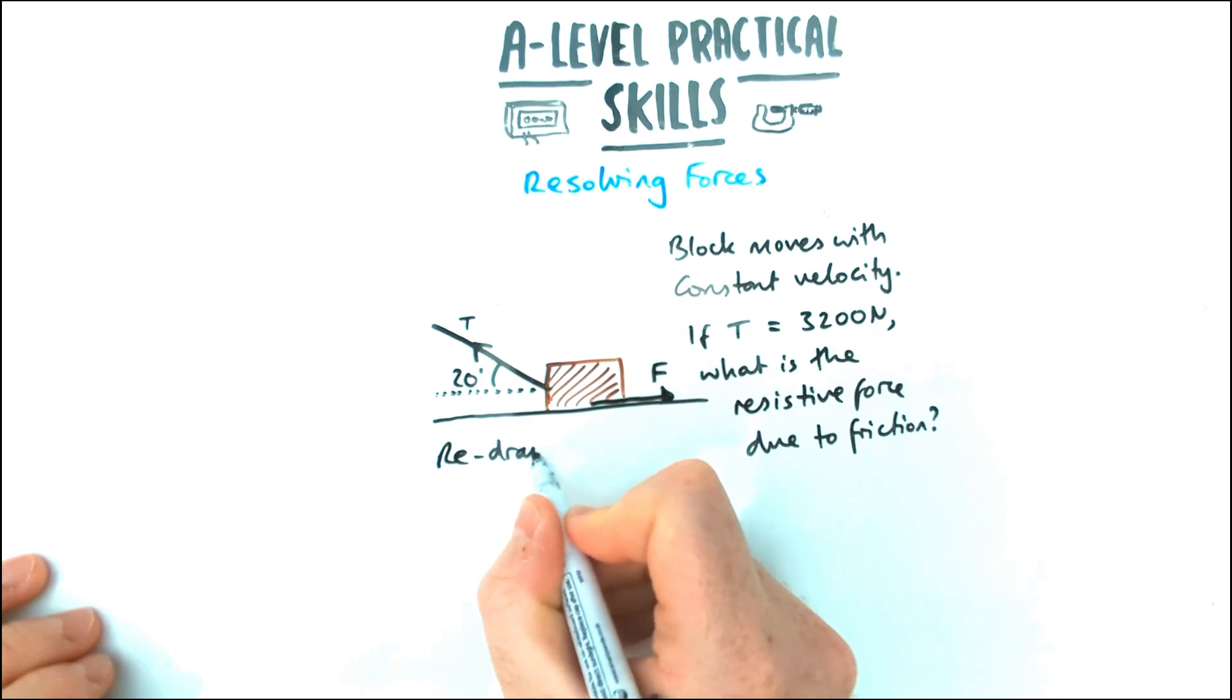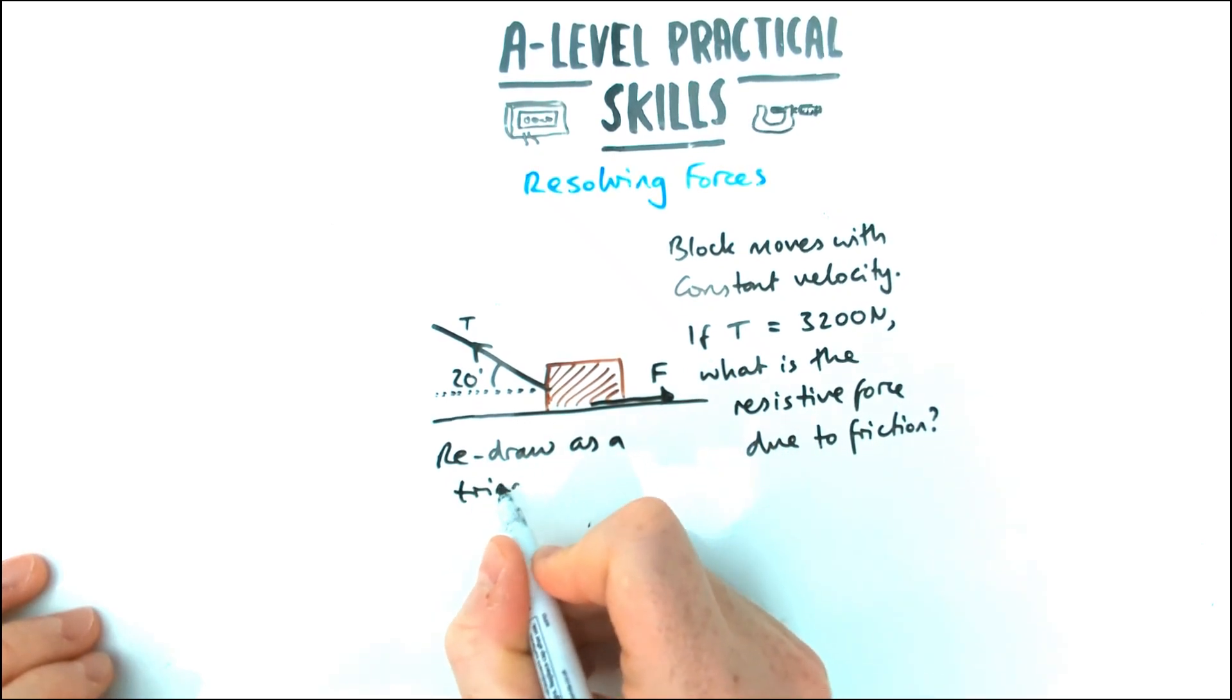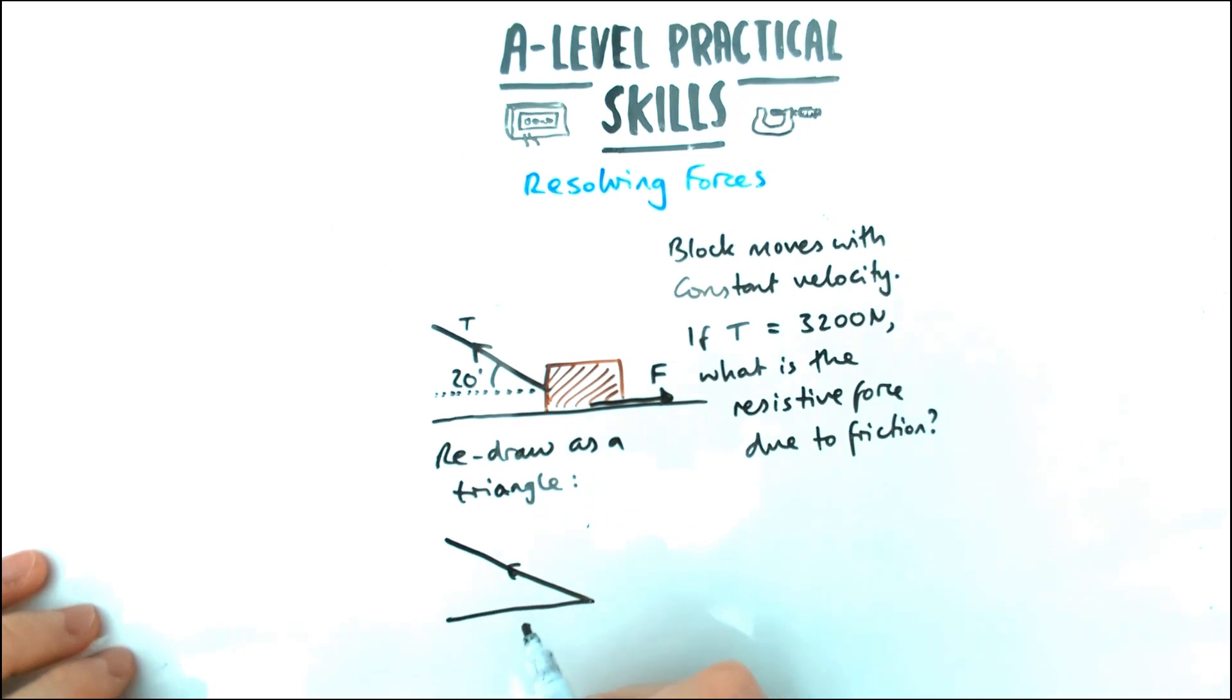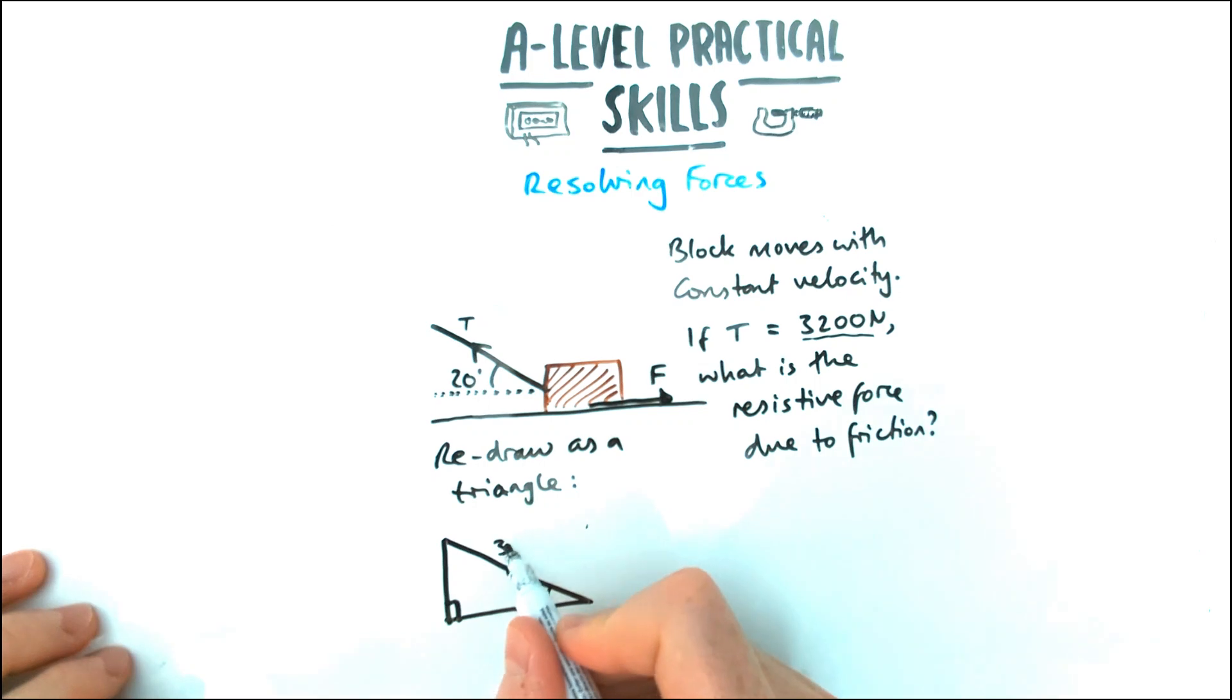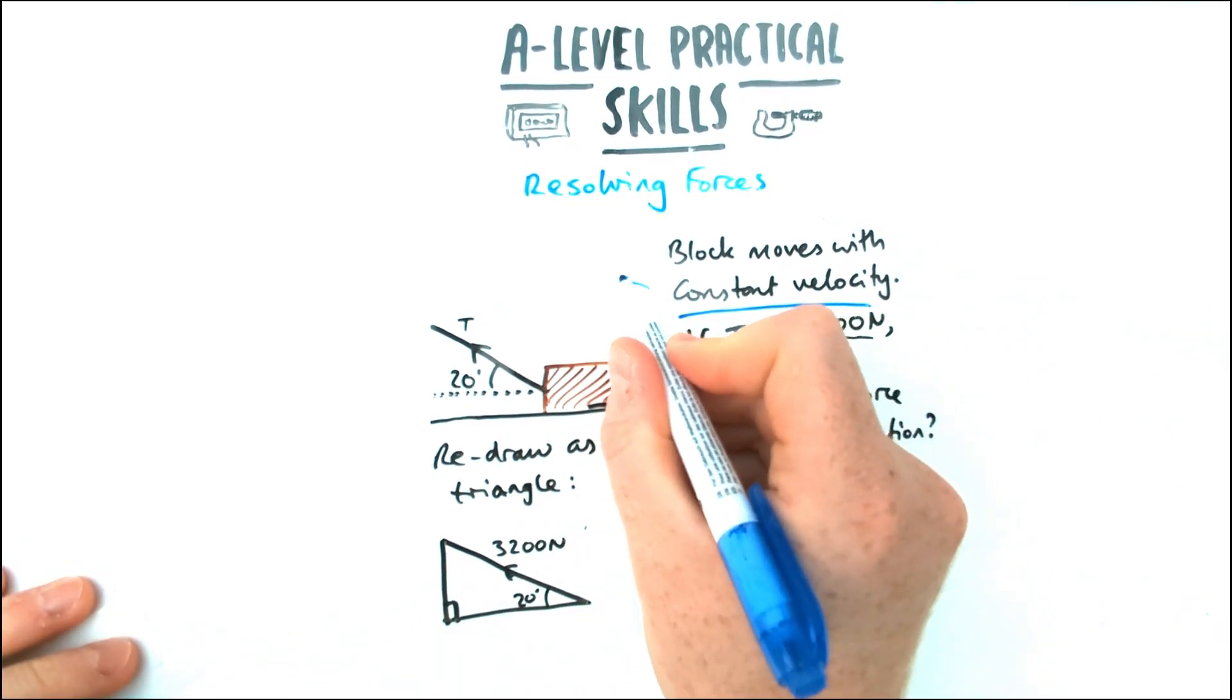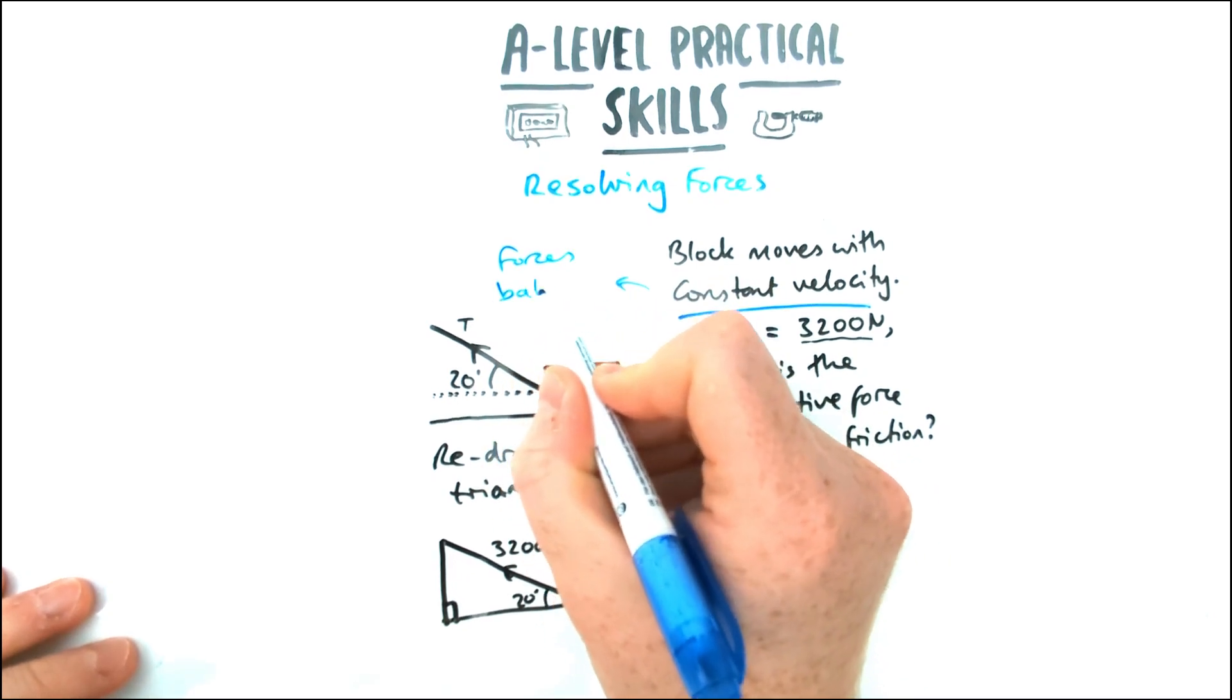Let's label it first of all. It's acting in the right direction. To understand this, we've got an angle, so we have to redraw our forces with a force triangle. I've got my T-force here is my hypotenuse, and I'm making a right-angled triangle where 20 degrees is the angle. The hypotenuse is 3,200, but F is pointing in the horizontal direction.